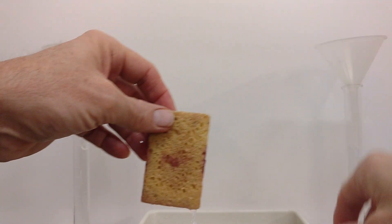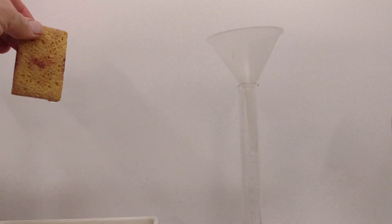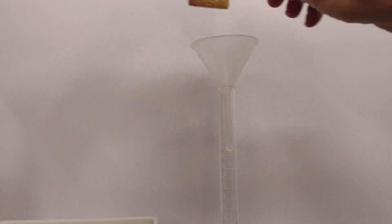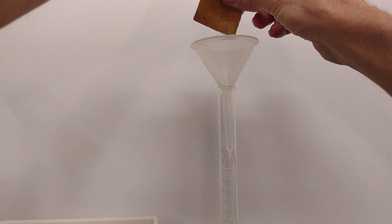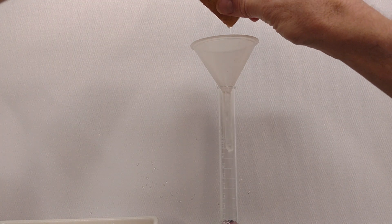So we have our graduated cylinder here, and our sponge. As a plant, we start taking the water out of the soil, or squeezing the water out of the sponge.